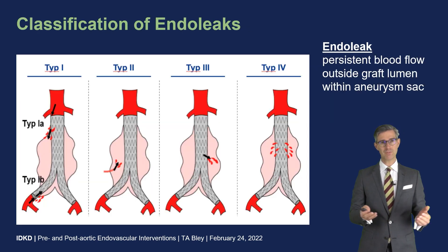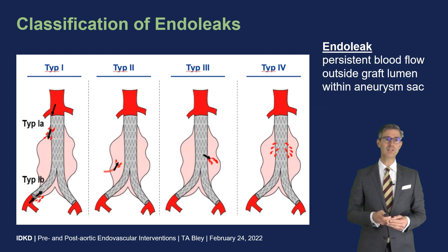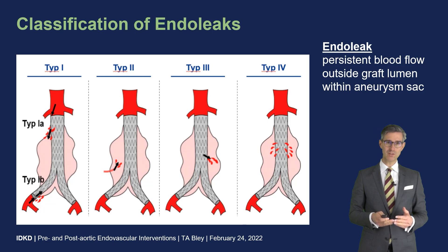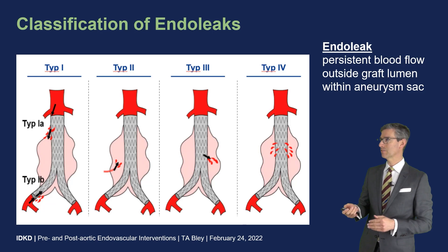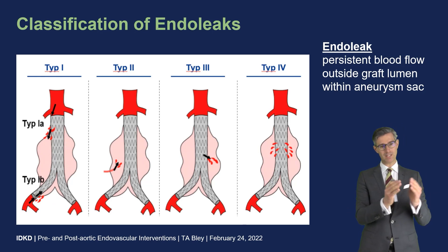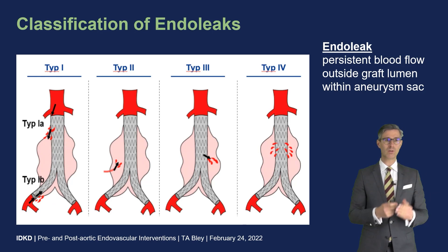There are different types of endoleaks. Type I is a high-pressure endoleak due to persistent flow outside the graft lumen into the aneurysm sac. In the proximal landing zone it would be a type Ia endoleak; in the distal landing zone, type Ib — occurring when there is improper alignment of the stent graft with the inner wall of the aorta.